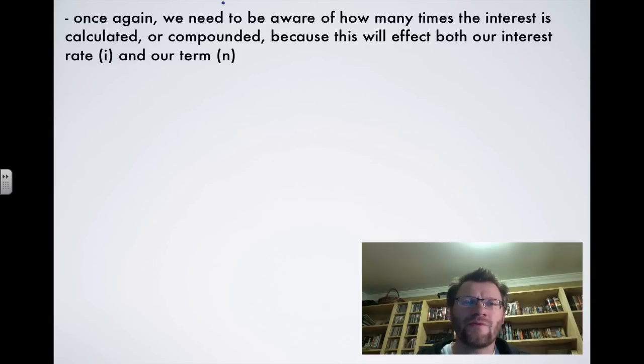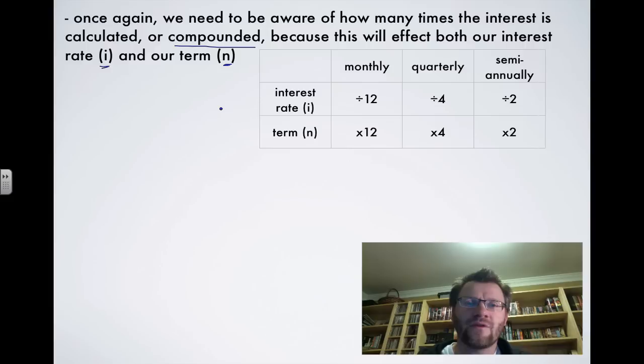So once again, when we're using these formulas, we need to be aware of how many times the interest is calculated, or what we say compounded, because this will affect both our interest rate, which we called I, and our term, which we called N. So here's a quick little table.